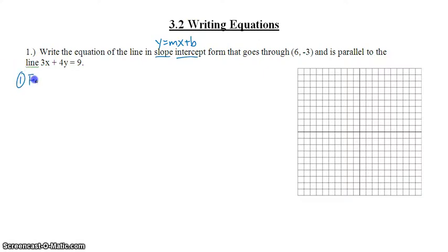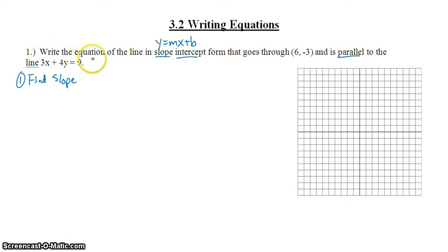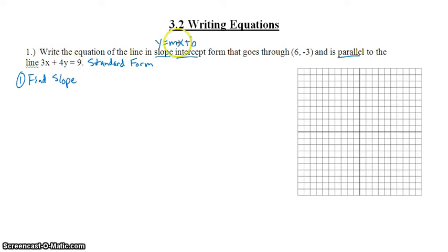Step one is to find that slope. In problem number one, we need to problem solve a little bit. We need to create a line parallel to this line. This is a line written in standard form. To convert a line in standard form to slope-intercept form, we need to solve for y. When we solve for y, we'll easily know the slope of this line.